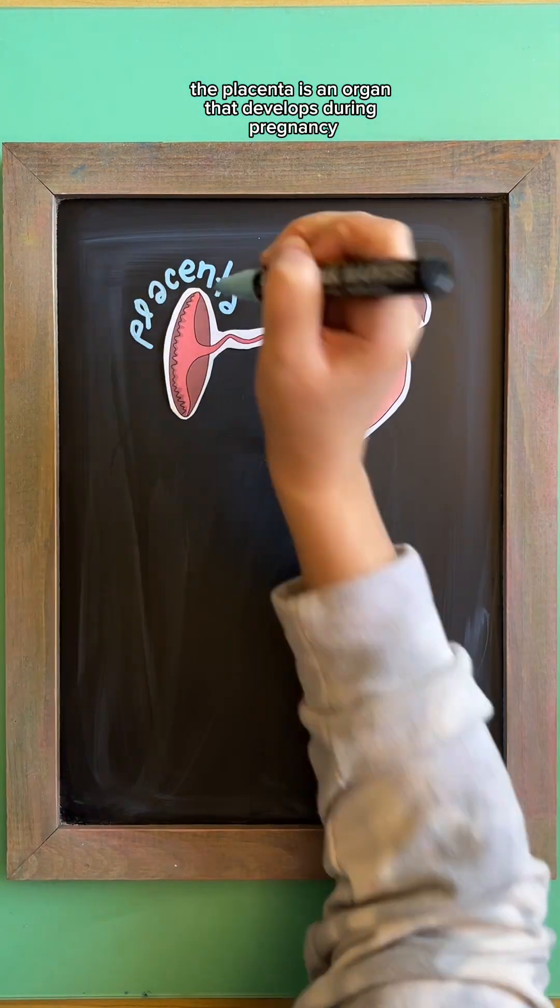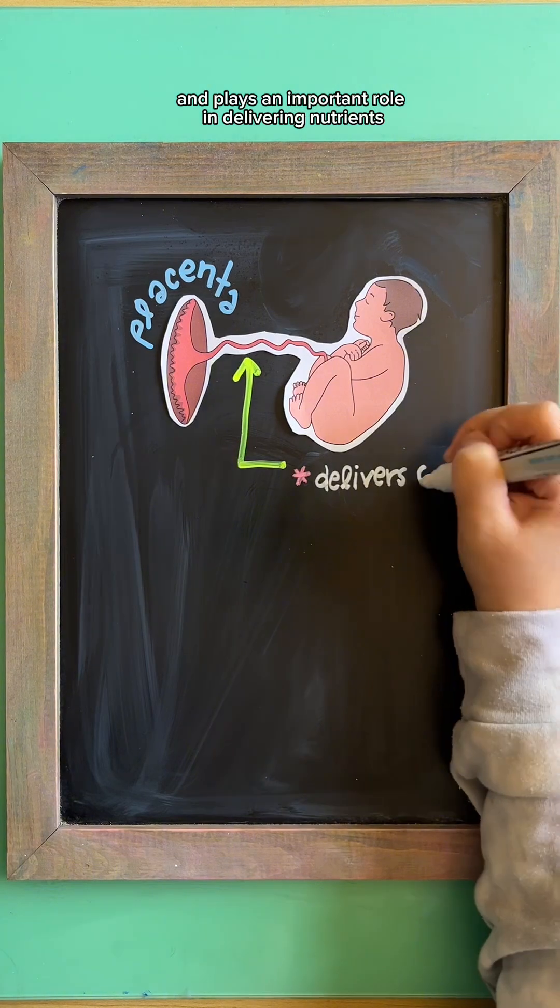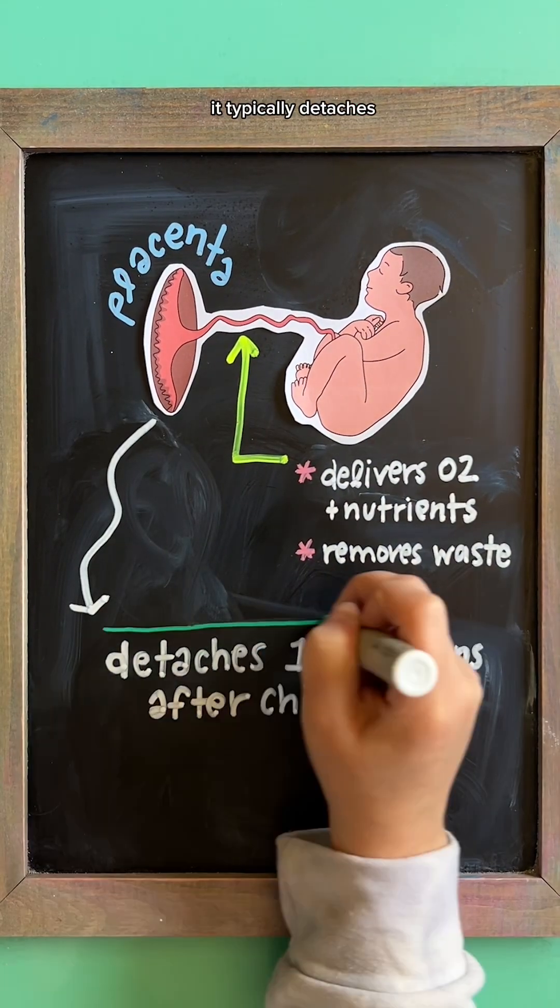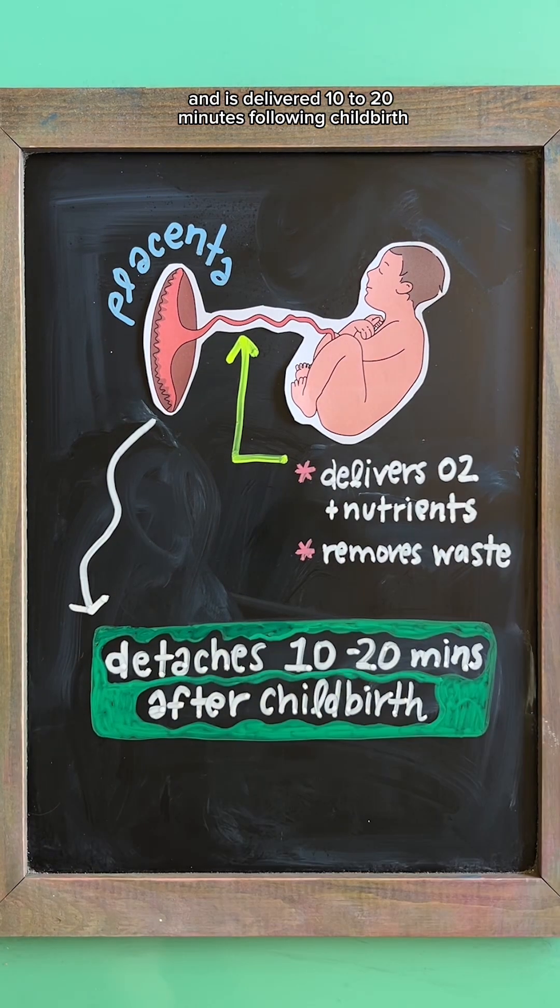The placenta is an organ that develops during pregnancy and plays an important role in delivering nutrients and oxygen to the baby, as well as removing waste. It typically detaches and is delivered 10 to 20 minutes following childbirth.